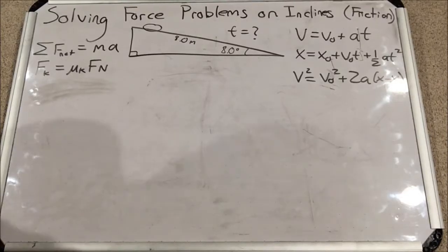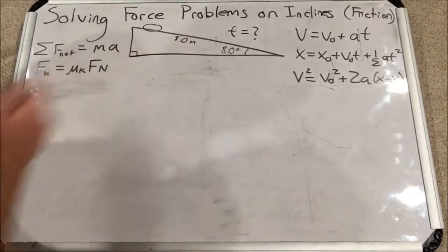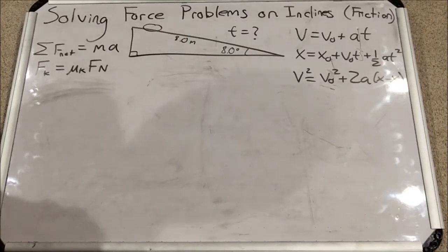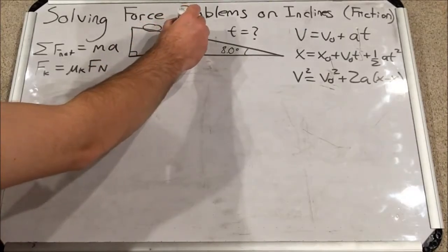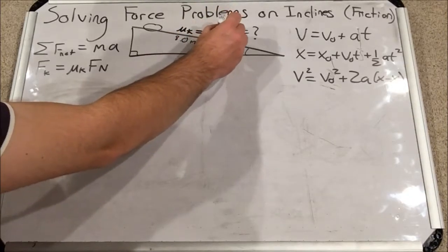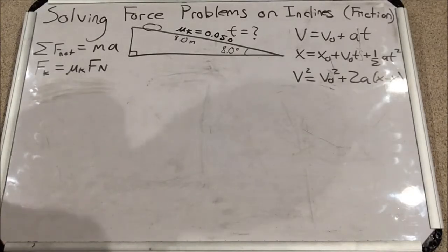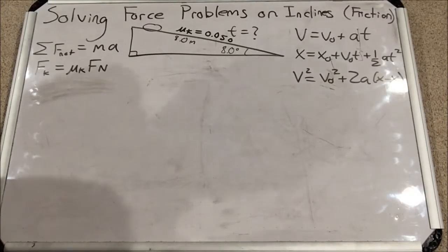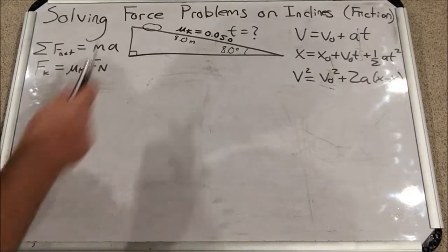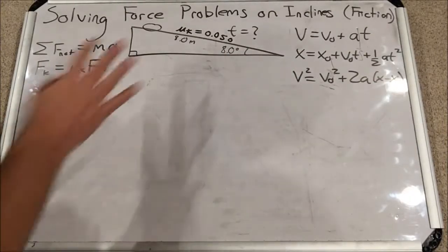So today, we have a bar of soap that is accelerating down an incline that is 8.0 degrees, and the length of the incline is 8 meters. And the problem gives you the coefficient of kinetic friction, a very small 0.050 between the soap and the ramp. So there's some friction there. We are asked, how long will it take the soap bar to traverse this entire ramp 8 meters long?